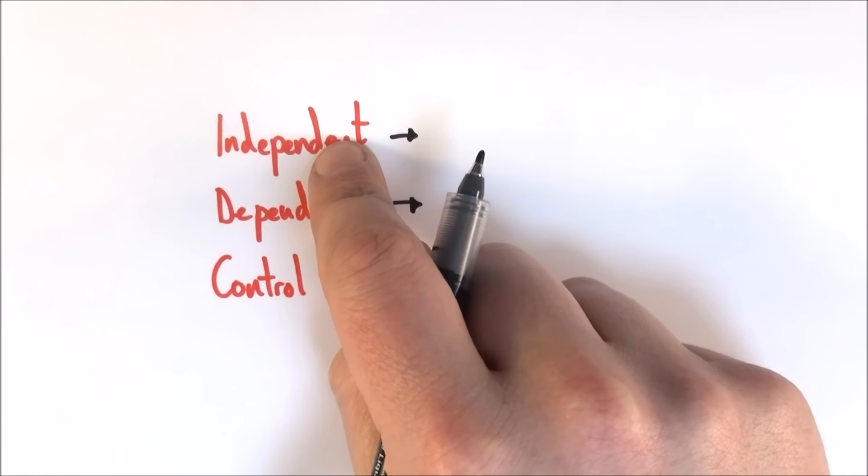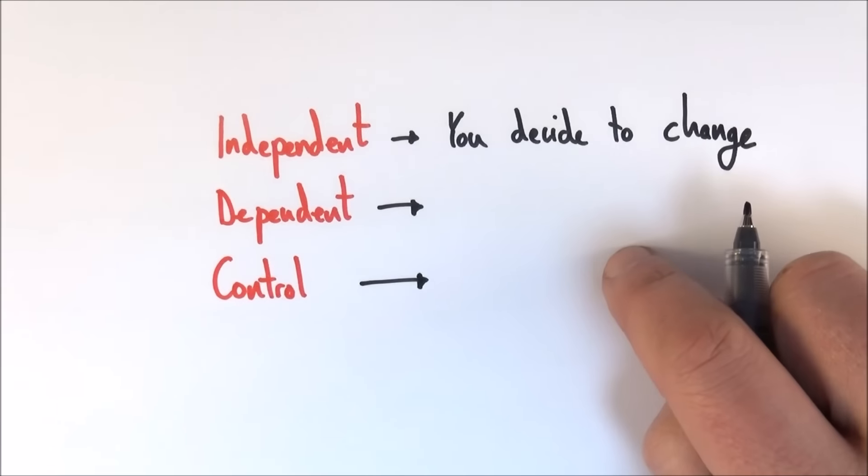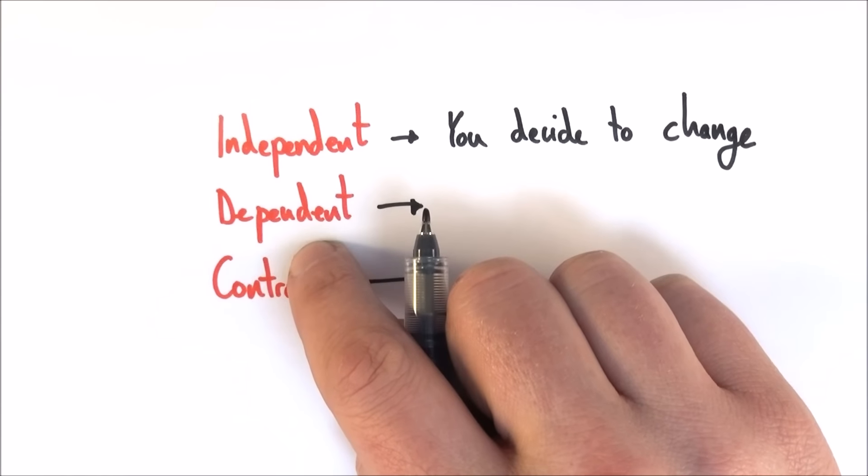First we have the independent variable. This is the thing that you decide to change. When you change something, it causes something else to change, and this is what you can measure. This is what we call the dependent variable.